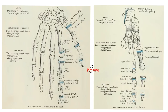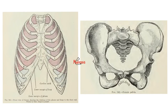In the wrist you have eight carpal bones, but in the ankle you have seven tarsal bones. After that, there are five metacarpals in the hand and five metatarsals in the foot. Then the phalanges: each finger has three phalanges except the thumb, which only has two. For the foot, each toe has three phalanges except the big toe, which only has two.